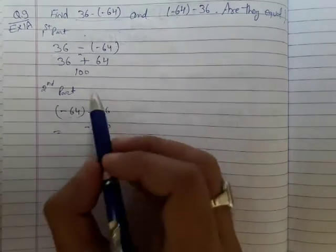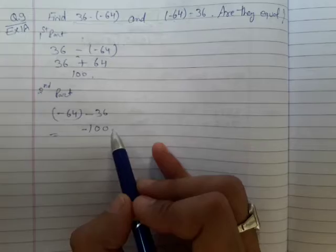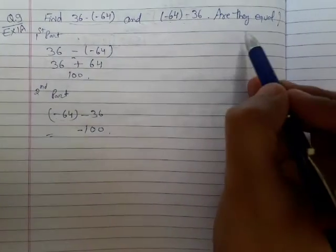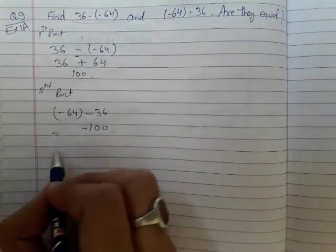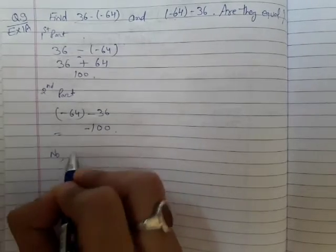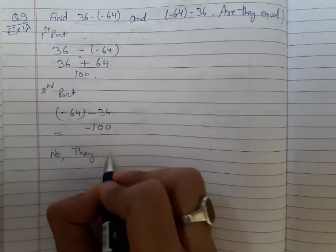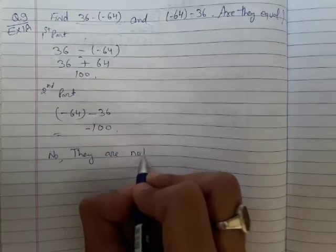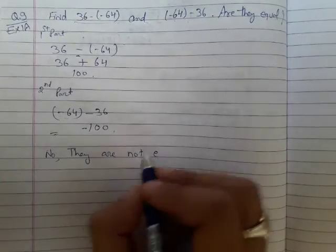will be negative hundred. So clearly you can see this is positive hundred, this is negative hundred. So are they equal? Answer is no, they are not equal. They are unequal.